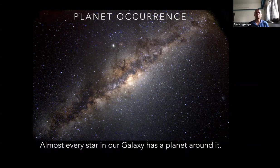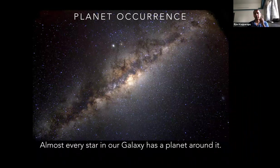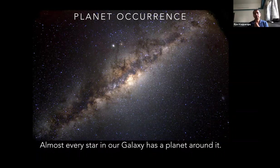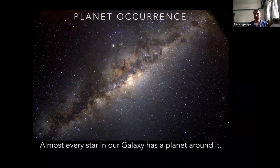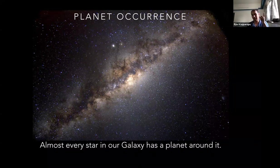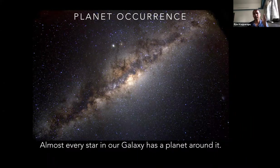This is called an occurrence rate — planet occurrence. We found that almost every star in our galaxy has a planet around it. Our galaxy has at minimum a hundred billion stars — about 10,000 crore stars — and it looks like almost every star has at least one planet. So we have at least 10,000 crore planets in our galaxy at the minimum, because our sun doesn't have just one planet — it has eight or nine. So there could be way more.